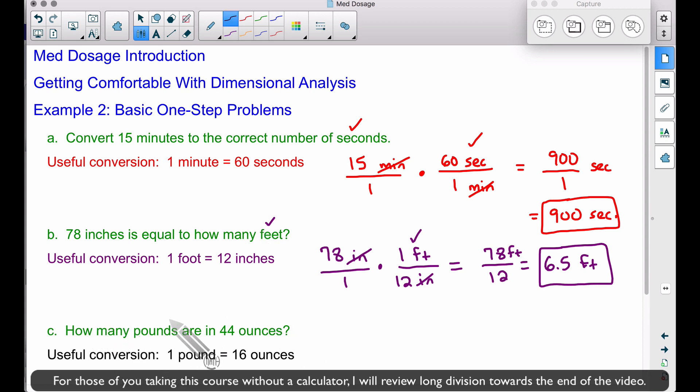Question C: How many pounds are in 44 ounces? We're given 44 ounces (abbreviated oz). Let's put that over 1. Some of you may know we just take 44 and divide by 16. Let's see how dimensional analysis sets that up perfectly. To get rid of ounces at the top, we need ounces at the bottom. Let's use our helpful conversion: 16 ounces equals 1 pound.